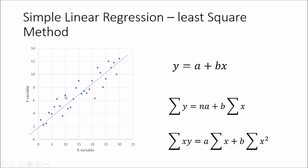We can draw a line that makes the vertical distance between each data point and the line minimum — that is the least square method. This line is drawn such that the total of distances to these points is minimum, which is why it is called the least square method. Once you draw that, you have the equation Y equals A plus BX.